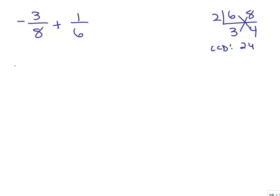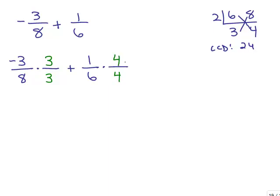I need to write each of these fractions with a common denominator. I have negative 3/8 and I'm going to write that negative 3 in the numerator to make it clear. For 8, this method tells you to multiply by 3 — 8 times 3 is 24 — so I multiply the first fraction by 3 over 3. To get 24 in the second fraction, I multiply 6 times 4, so I multiply that fraction by 4 over 4. That's the first step: get a common denominator.